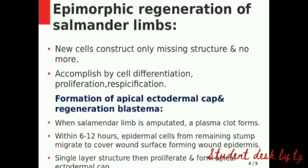Epimorphic regeneration is exemplified by salamander limbs. The new cells will only construct the missing structure. Three processes are involved: cell differentiation, proliferation, and respecification. These three methods work together to construct the same missing structure.